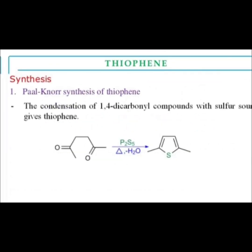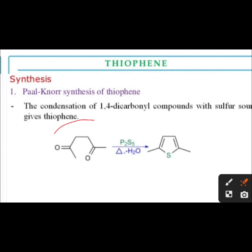Now see the synthesis of thiophene. First, we will see the Paal-Knorr synthesis of thiophene. The statement of Paal-Knorr synthesis is: the condensation of a 1,4-dicarbonyl compound with a sulfur source gives thiophene. Here is the 1,4-dicarbonyl compound in the presence of P2S5 and heating to give thiophene.